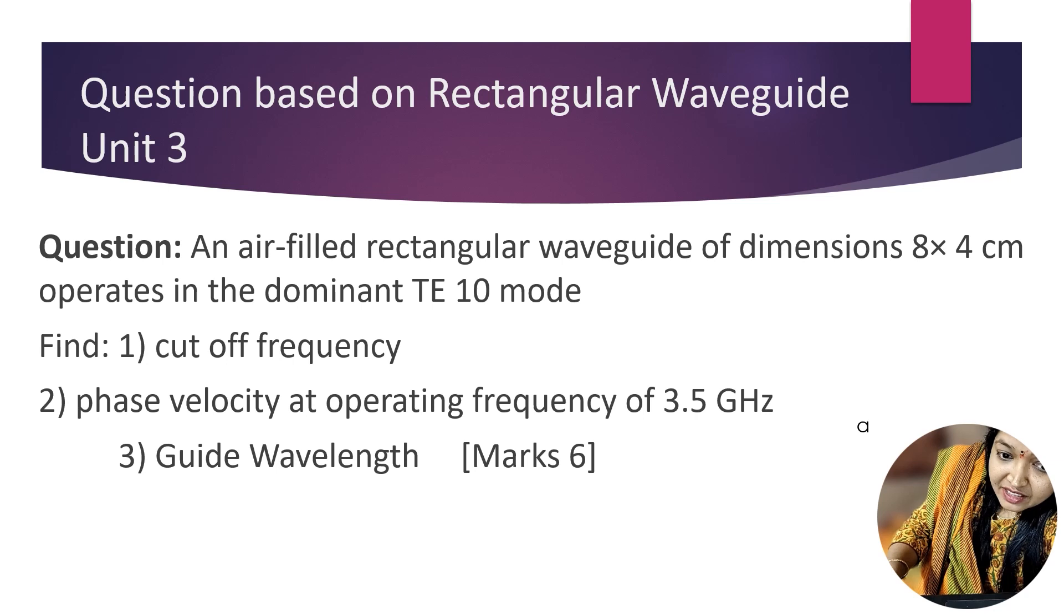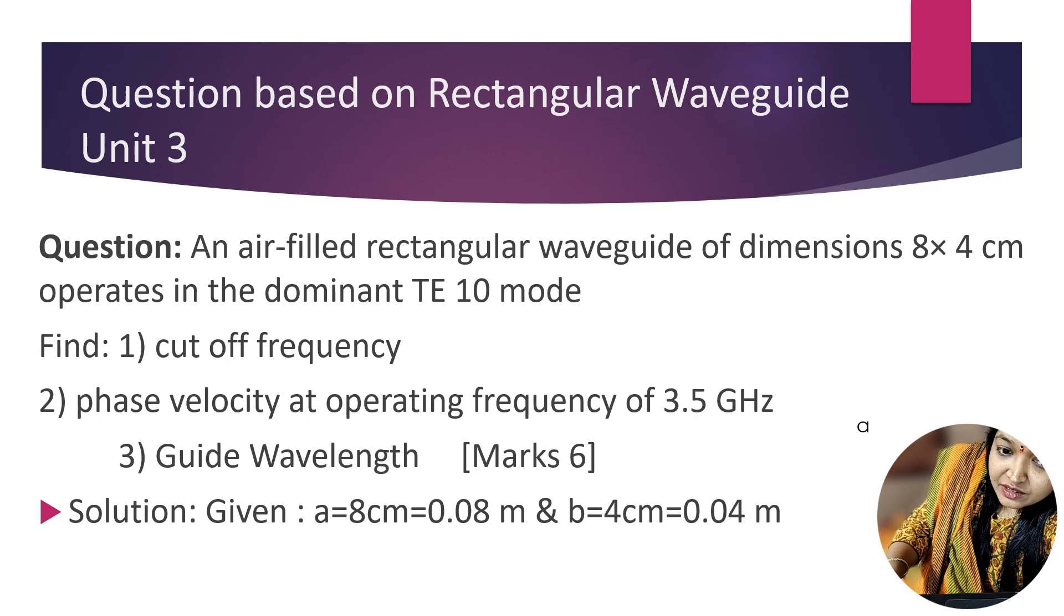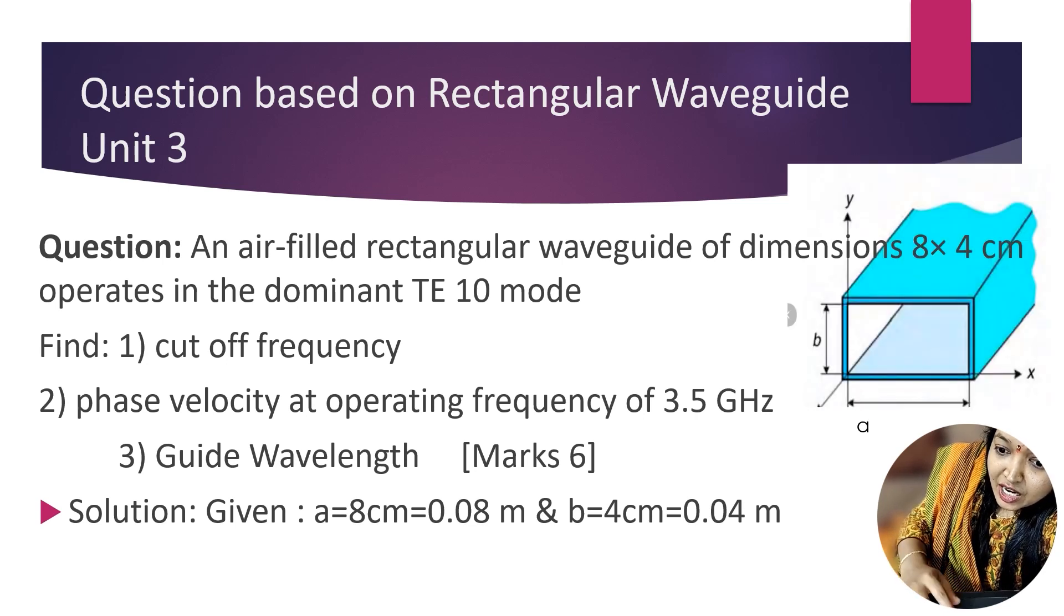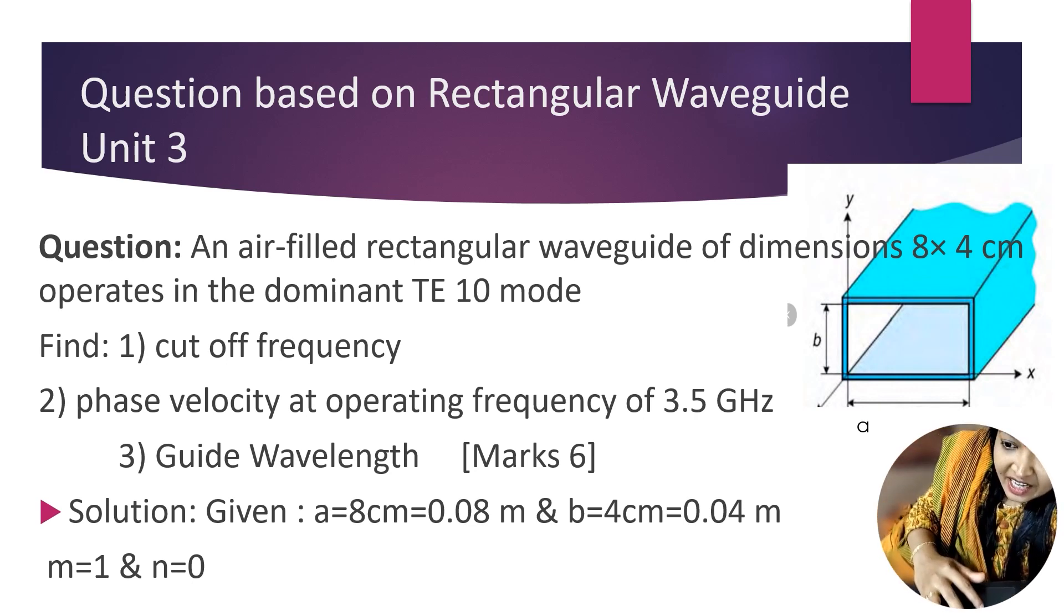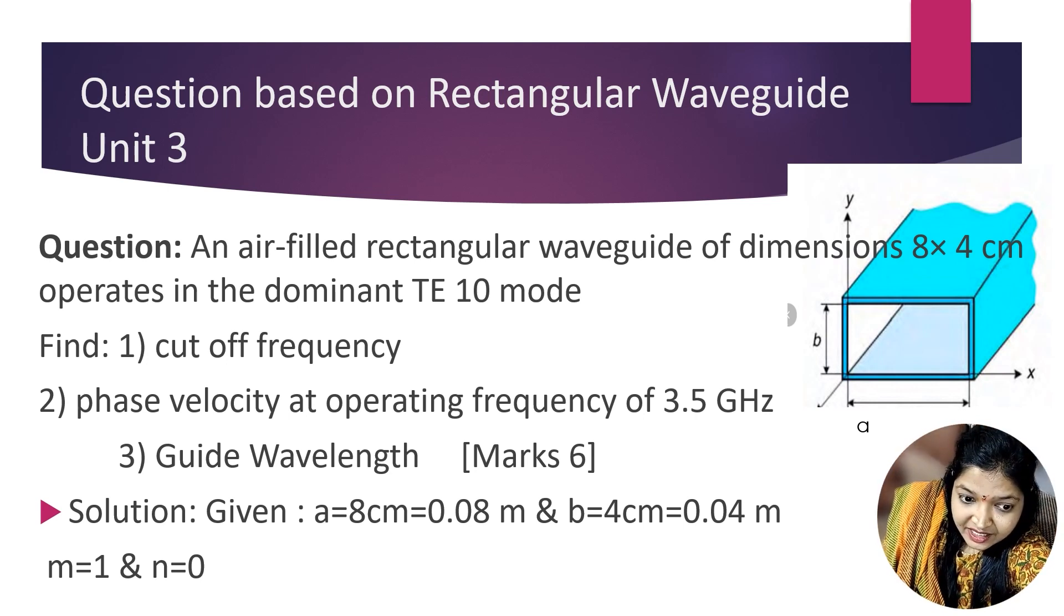First, let's see how the waveguide looks. This is the height, this is the width: B and A. So A = 8 cm and B = 4 cm. We convert it into meters: A = 0.08 m and B = 0.04 m. Here m = 1 because dominant mode is there, and n = 0.